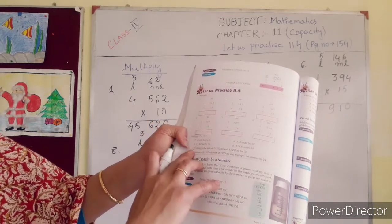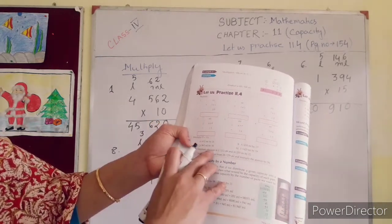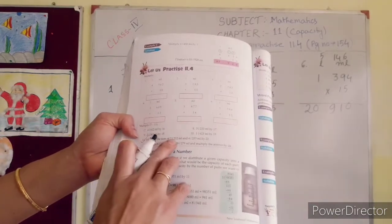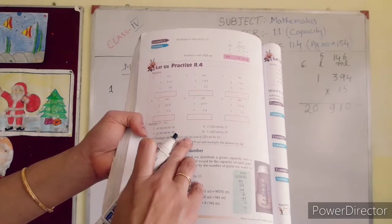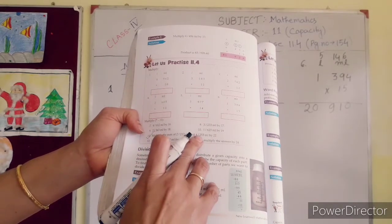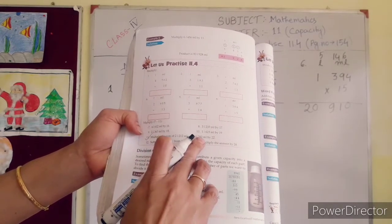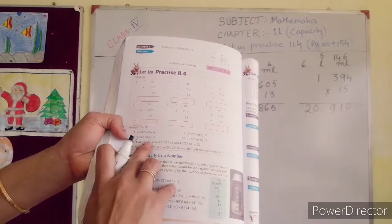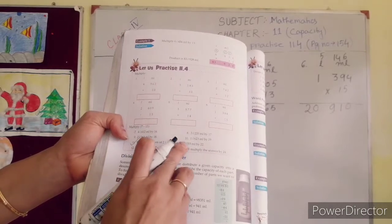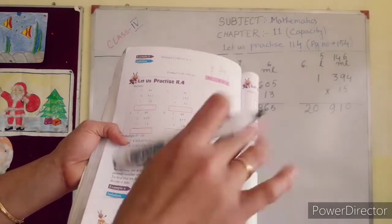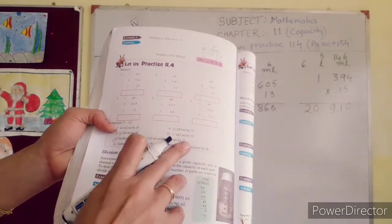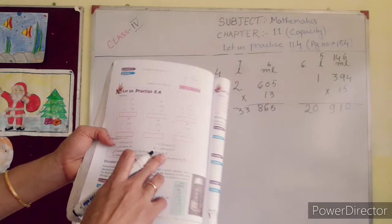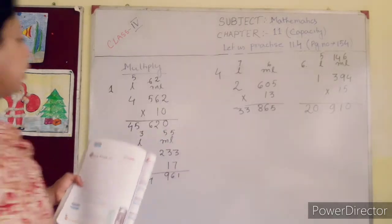Multiply number 11. Multiply the sum of 2 liter 212 ml and 4 liter 253 ml by 22. First you add these two numbers, then you will multiply the result by 22.